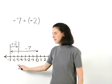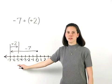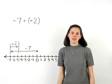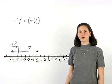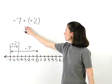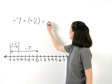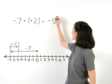And we end up at negative five. So negative seven minus negative two, or negative seven plus positive two, equals negative five.